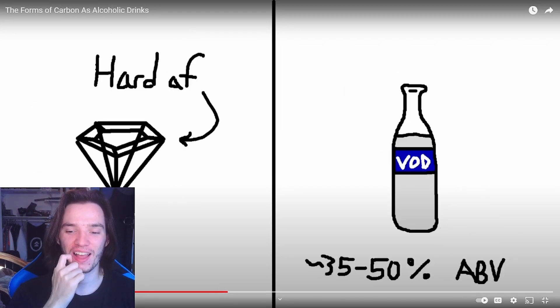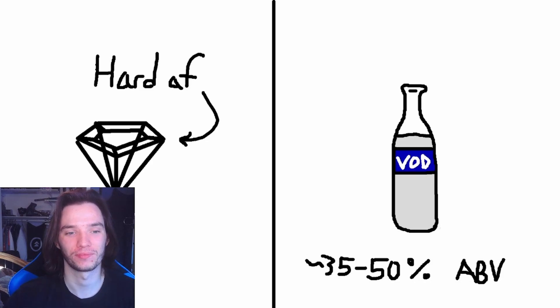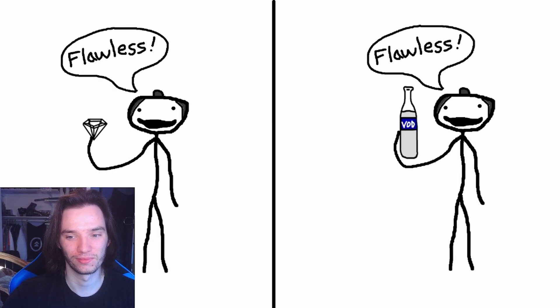Sam: 'Diamond is like vodka. First of all, it's very strong — the strongest form that's likely to be found in the average household. It's typically valued based on its purity and clarity.'